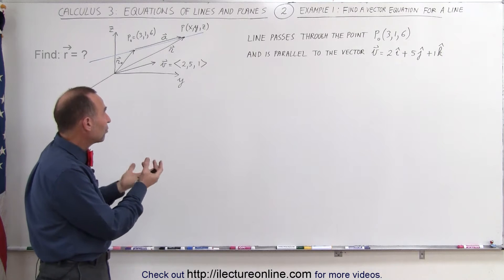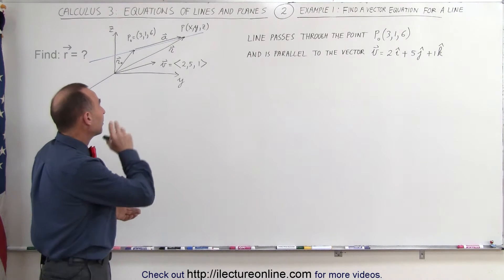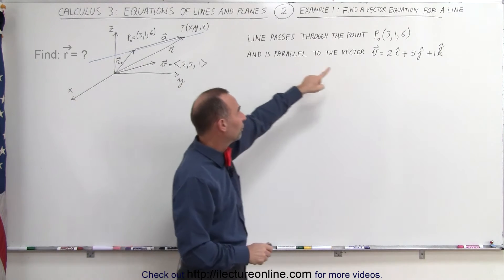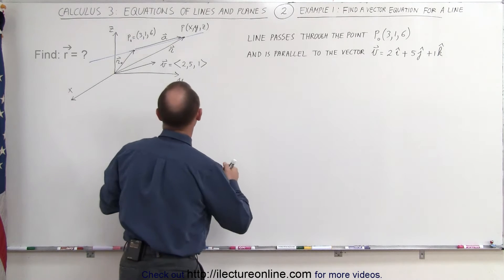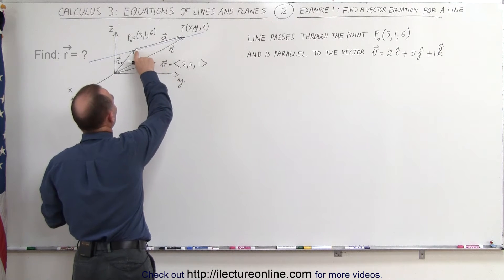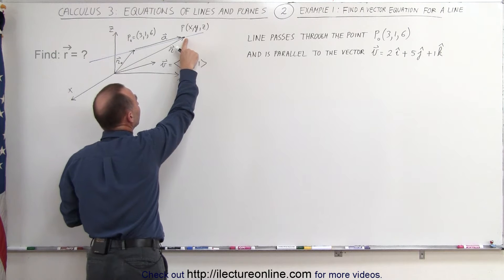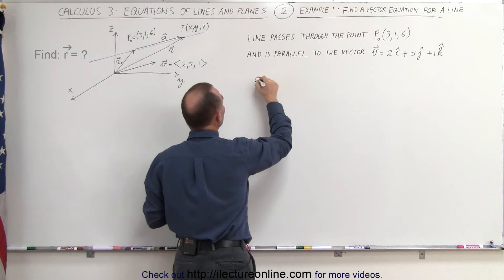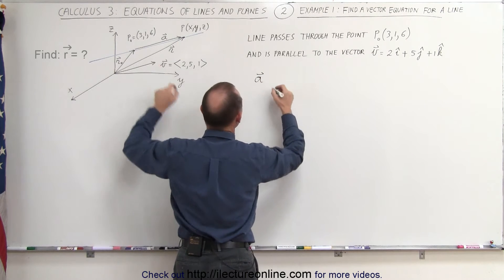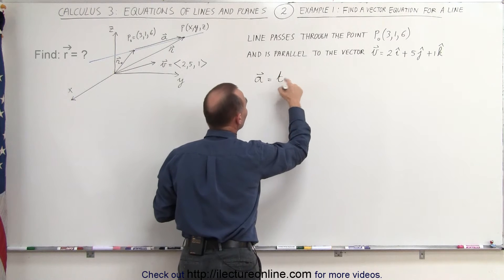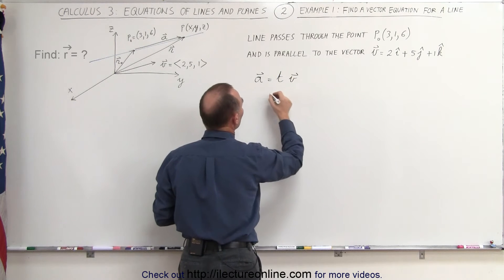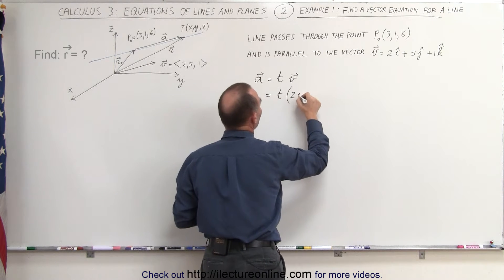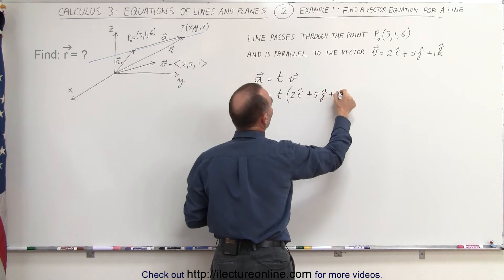How do you write an equation in the form of a vector to describe that particular line? Well, since we know that the line passes through that point and is parallel to the vector, as indicated there, we can say that the vector from the known point to some other arbitrary point on the line — called x, y, z — the vector a can be written as follows. Vector a, which is parallel to vector v, can be written as some constant, some parameter t, times the vector v. That means a can be written as t times the vector 2i plus 5j plus 1k.